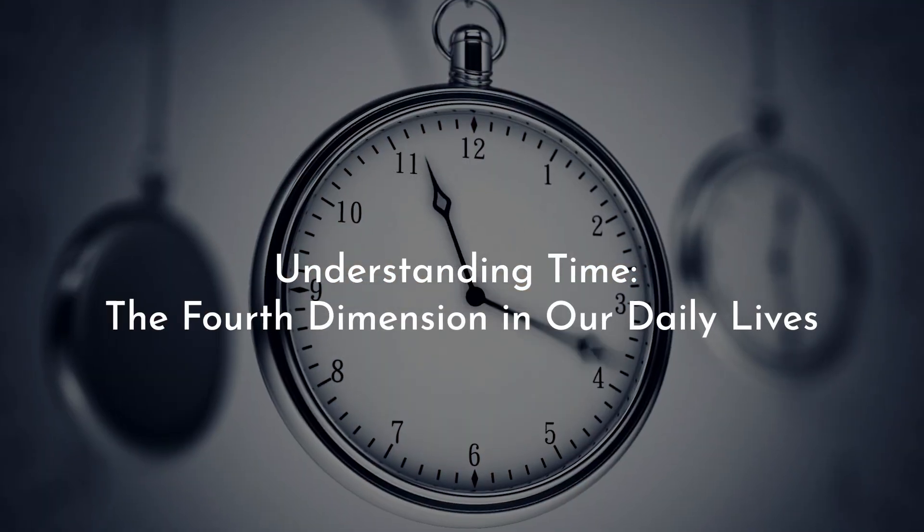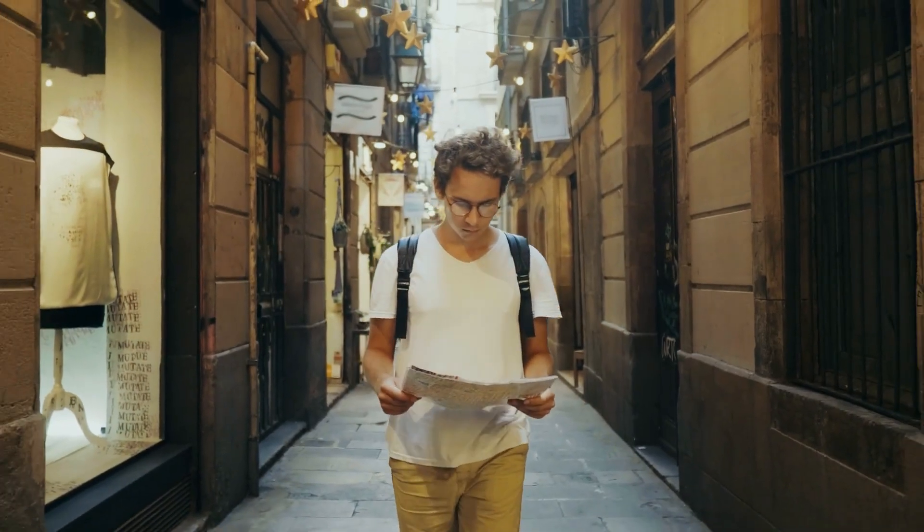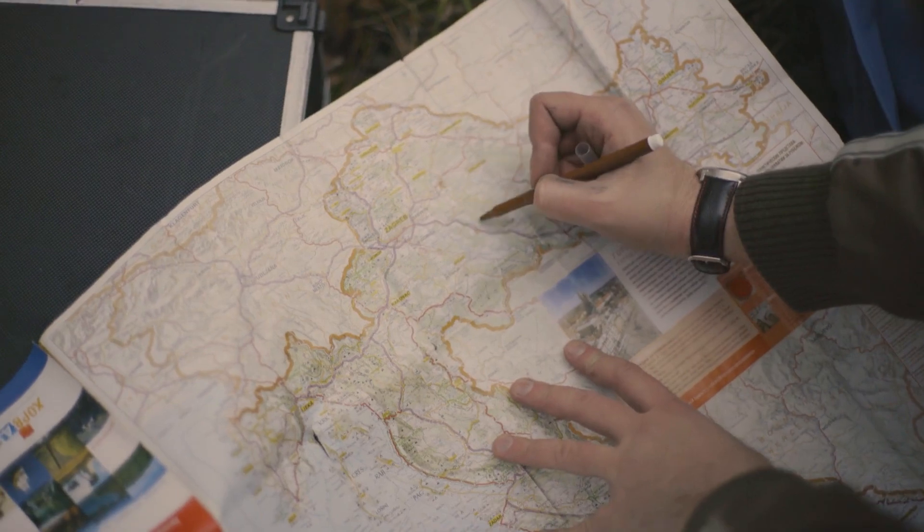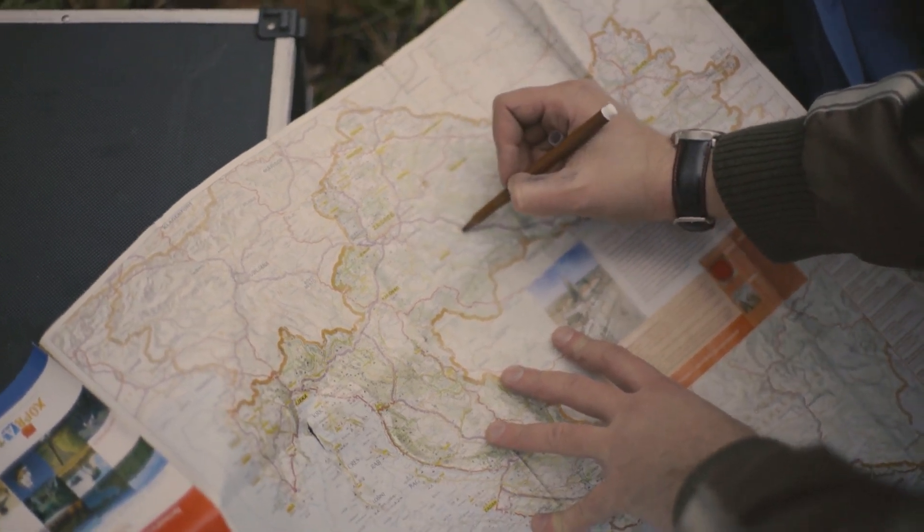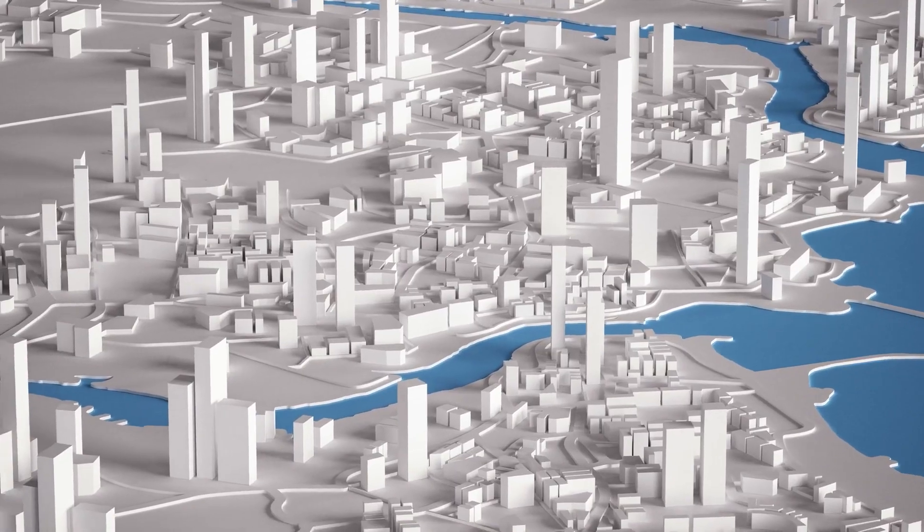Understanding time, the fourth dimension in our daily lives. Imagine if you had a map of your city. This map shows the length and breadth of the city. That's two dimensions. Now, add in the height of buildings and hills. You've got three dimensions.